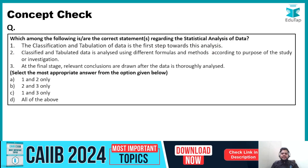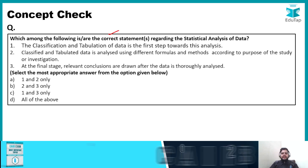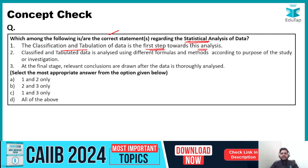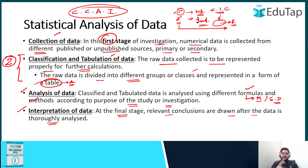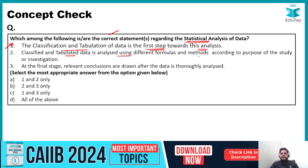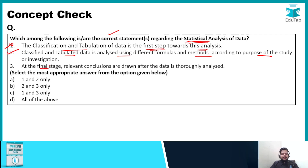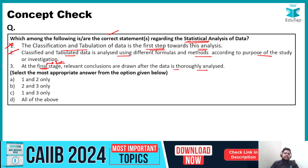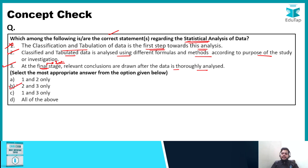Let's look at a question — theory questions from Module A are simple. Question: which among the following are the correct statements regarding statistical analysis of data? Statement: 'Classification and tabulation of data is the first step towards this analysis' — this is wrong; the first step is collection. Statement: 'Classified and tabulated data is analyzed using different formulas and methods according to the purpose of study' — absolutely right. Statement: 'At the final stage, relevant conclusions are drawn after the data is thoroughly analyzed' — again correct. So option B is the right answer.